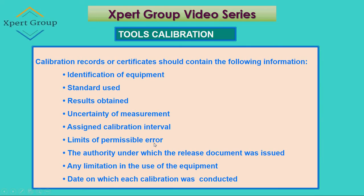Limits of permissible error — any allowed permissible error limits should be mentioned in the record. The authority under which the release document was issued should be mentioned. Any limitation in the use of the equipment should be mentioned by the calibration organization from where you are getting the calibration. The date on which each calibration was conducted should also be recorded, meaning you should have a good record of dates when you conducted the calibration of that specific tool.